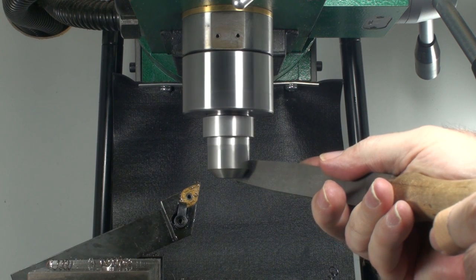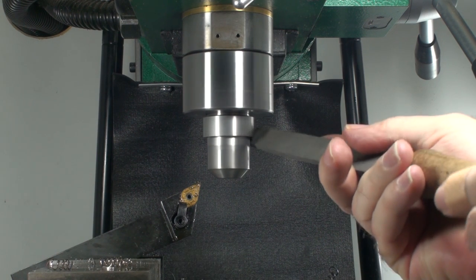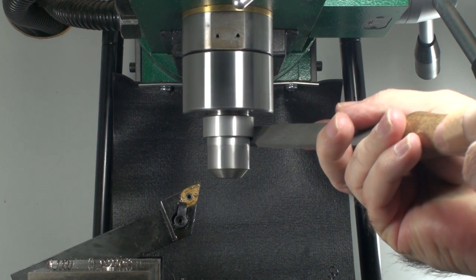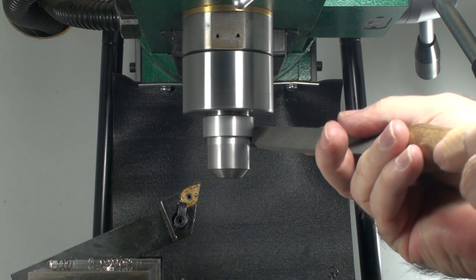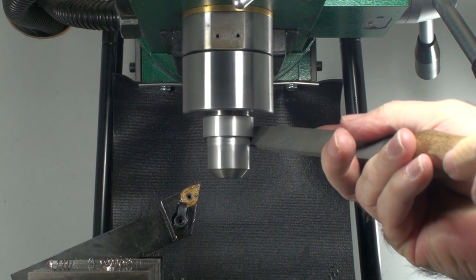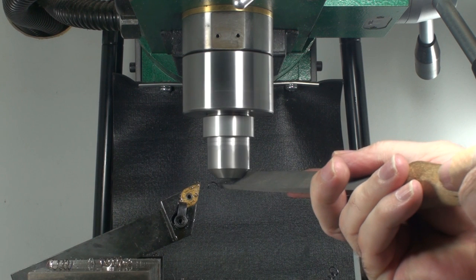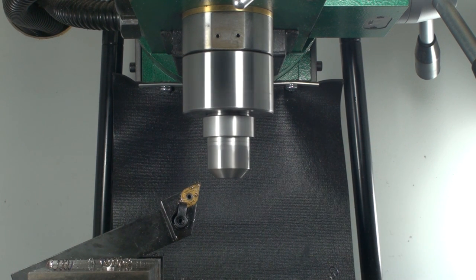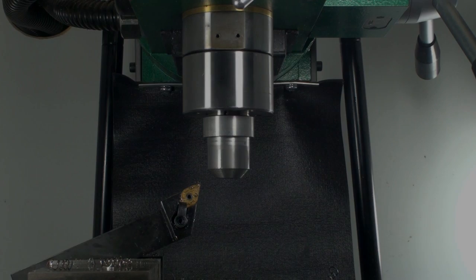Once all the cuts have been made, I usually take a file and break all the sharp corners, just to make it a little bit easier to handle. If I'm concerned about the final finish, I use a couple of grits of emery cloth to polish it up. But the finish as cut by the mill is perfectly acceptable with just a little bit of file work to knock off the sharp spots.